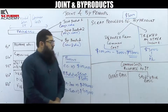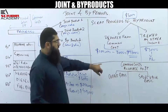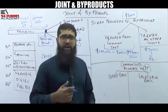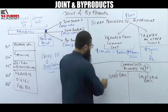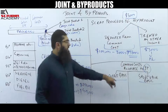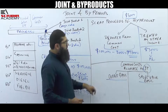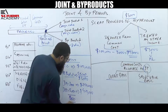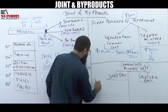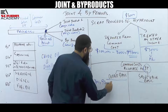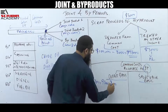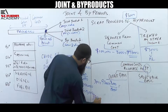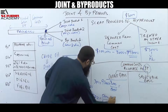Next, the common costs are allocated to the joint products. There are two ways of doing this: on the basis of output or on the basis of sales value. On the basis of output, we have 3,000 units and 5,000 units, giving total output of 8,000 units. Joint product 1 gets $97,000 × (3,000/8,000), and joint product 2 gets $97,000 × (5,000/8,000). This is how you allocate common costs on the output basis.